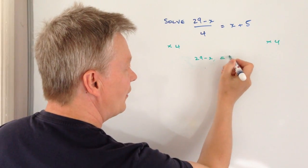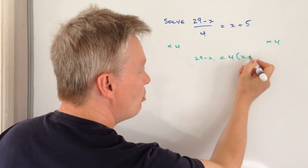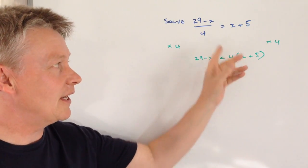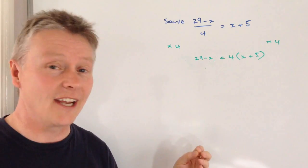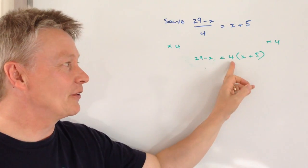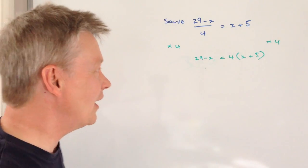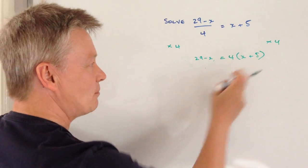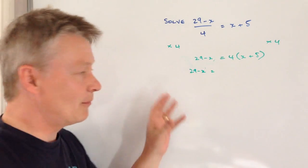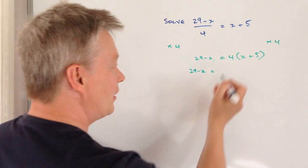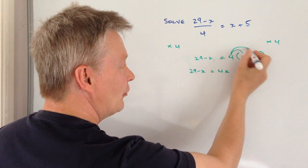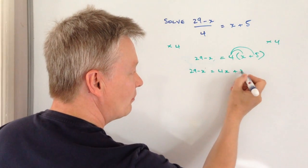On the right hand side, I need to multiply both terms by 4. Now just be very careful about this, because I've seen this quite a lot — it's not 4 times x, it's 4 times (x plus 5). You have to make sure that you multiply both terms by 4. So I need to expand that bracket: 29 minus x remains the same on the left hand side. On the right hand side, 4 times x is 4x, and 4 times 5 is plus 20.